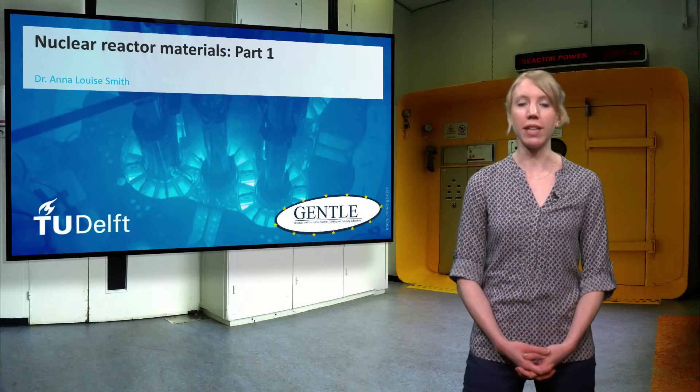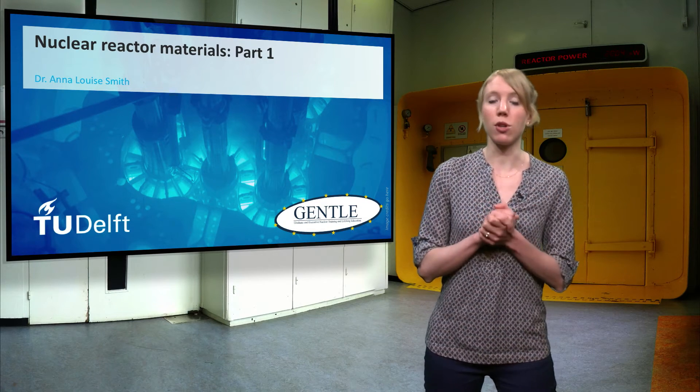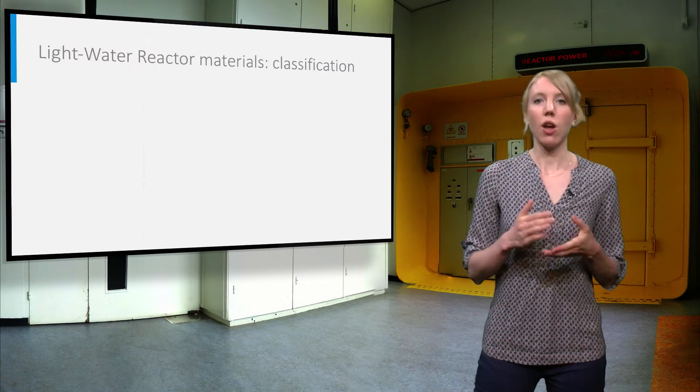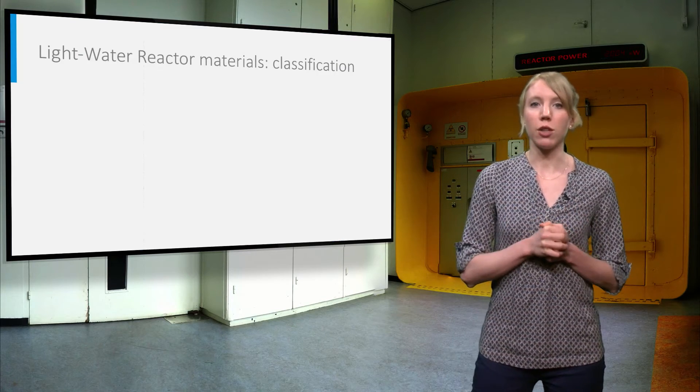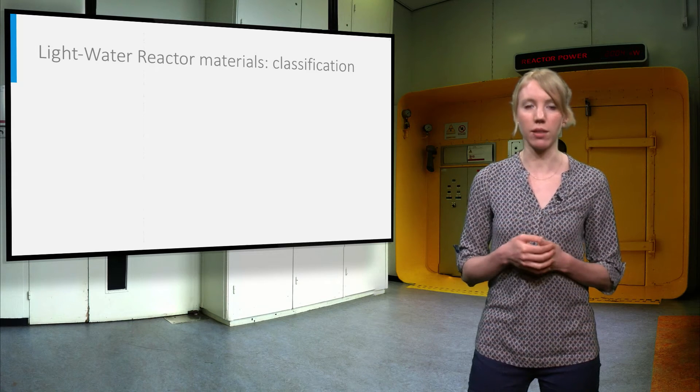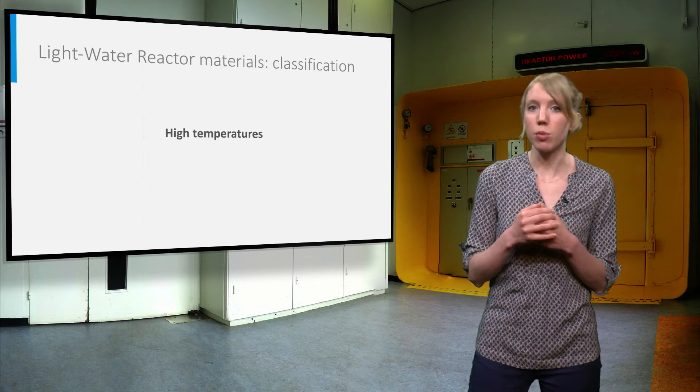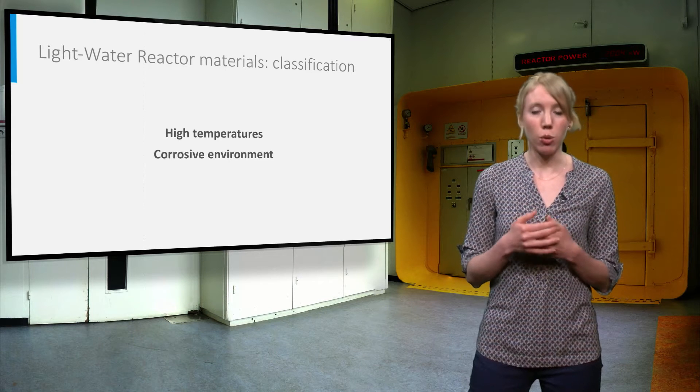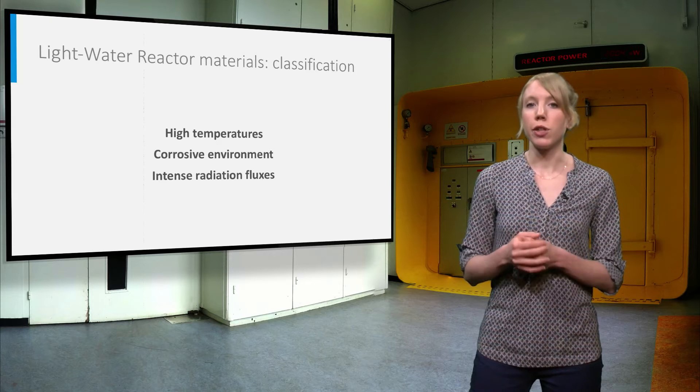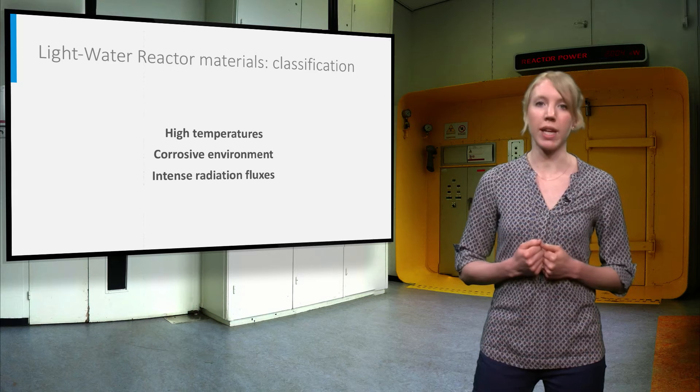What is a nuclear reactor made of? In this lecture, you will learn about the main types of nuclear reactor materials and their specific characteristics. The safety and economics of light water reactors rely on the performance of the materials used in the reactor. These materials must resist extreme conditions such as high temperatures and gradients, a corrosive environment, and intense radiation fluxes. The degradation of materials can lead to reduced performance and in some cases failure.